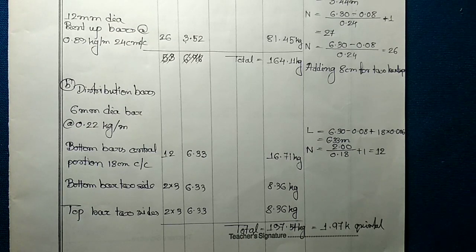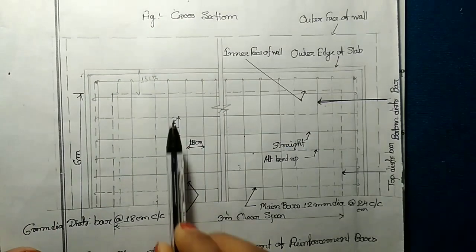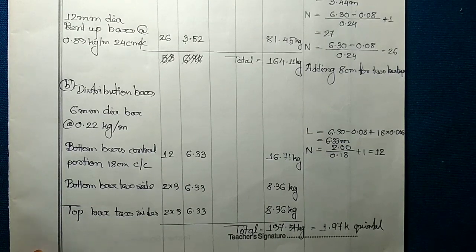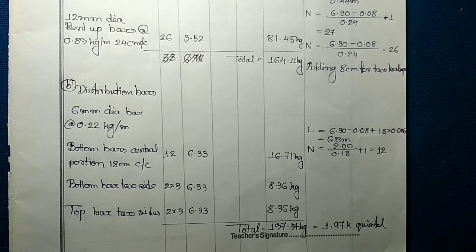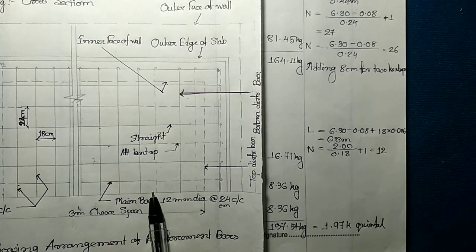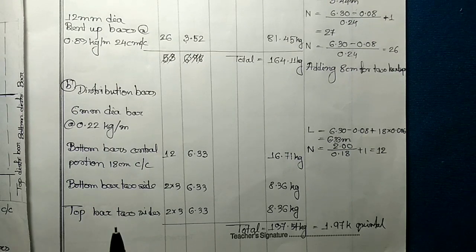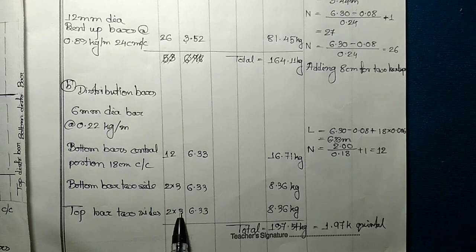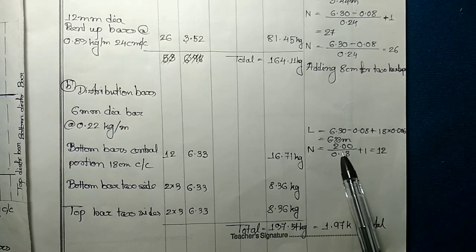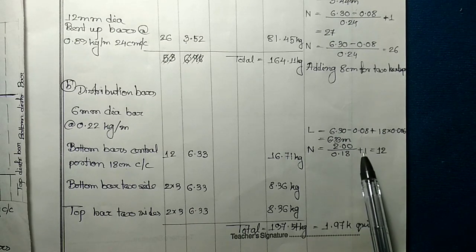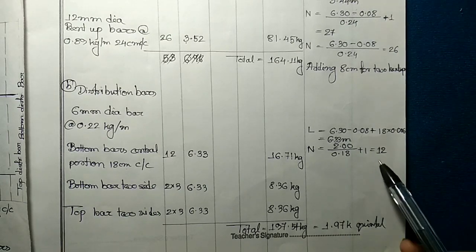The next item is the distribution bar, for which we are using 6mm dia bar. In the central portion we place bars at the bottom, and in the extreme left and right we place some bars at the bottom and some at the top. From the figure, we have placed 3 at the bottom and 3 at the top on each side, so the number for the sides is 3 × 2 = 6. For the bottom bar in the central portion, the remaining length is 2 meters, so 2m ÷ spacing + 1 gives a number of 12.